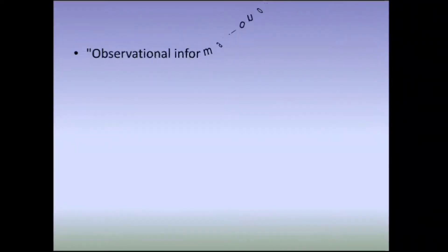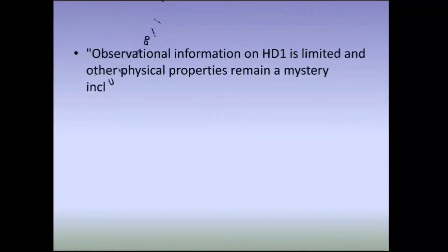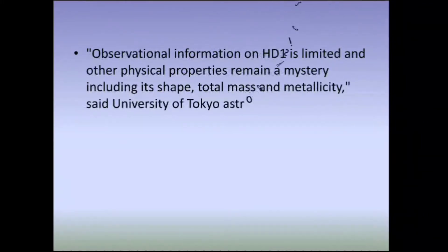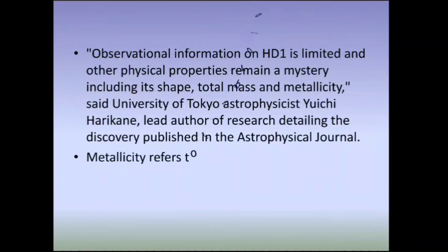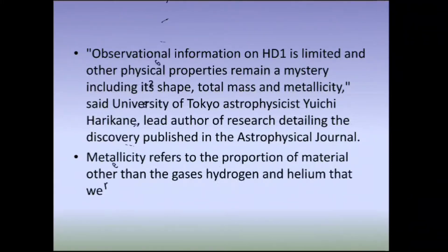Observational information on HD1 is limited and other physical properties remain a mystery including its shape, total mass and metallicity, said University of Tokyo astrophysicist Harikane, lead author of research detailing the discovery published in the Astrophysical Journal. Metallicity refers to the proportion of material other than the gases hydrogen and helium that were present in the Primordial Universe.